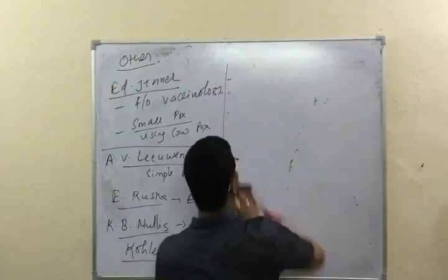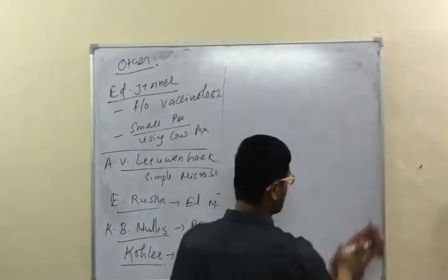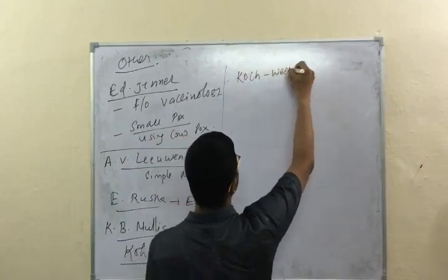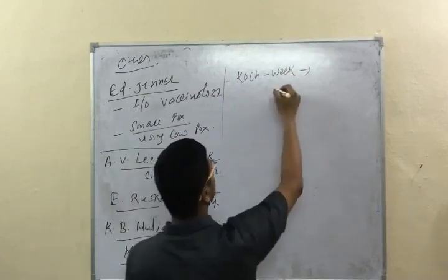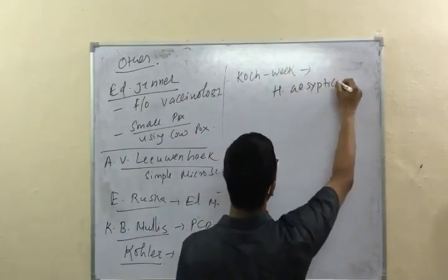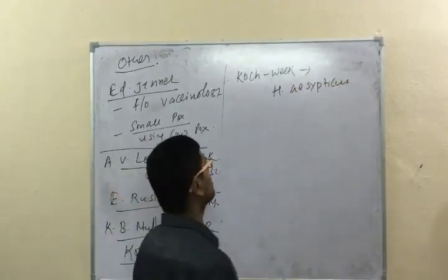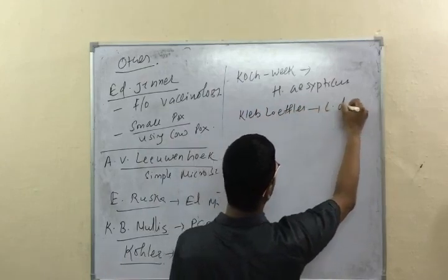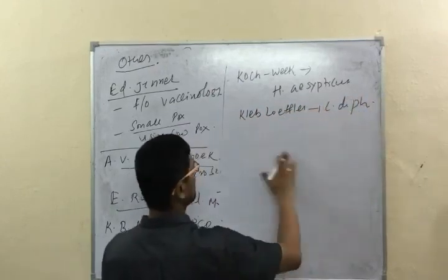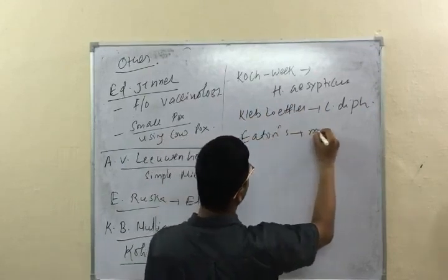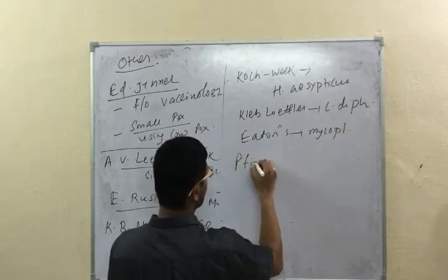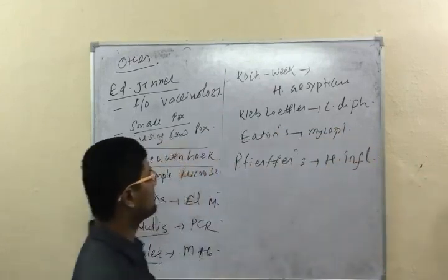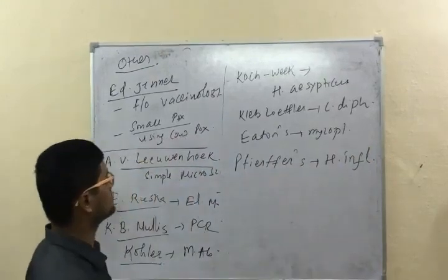Köhler is the inventor of monoclonal antibody. These are some of the important contributors in the field of microbiology. There are also various organisms named after their discoverers, for example Haemophilus aegypticus, Klebsiella, and Eaton's agent, which is Mycoplasma. The detailed list is in the textbook — I am just outlining the important ones.